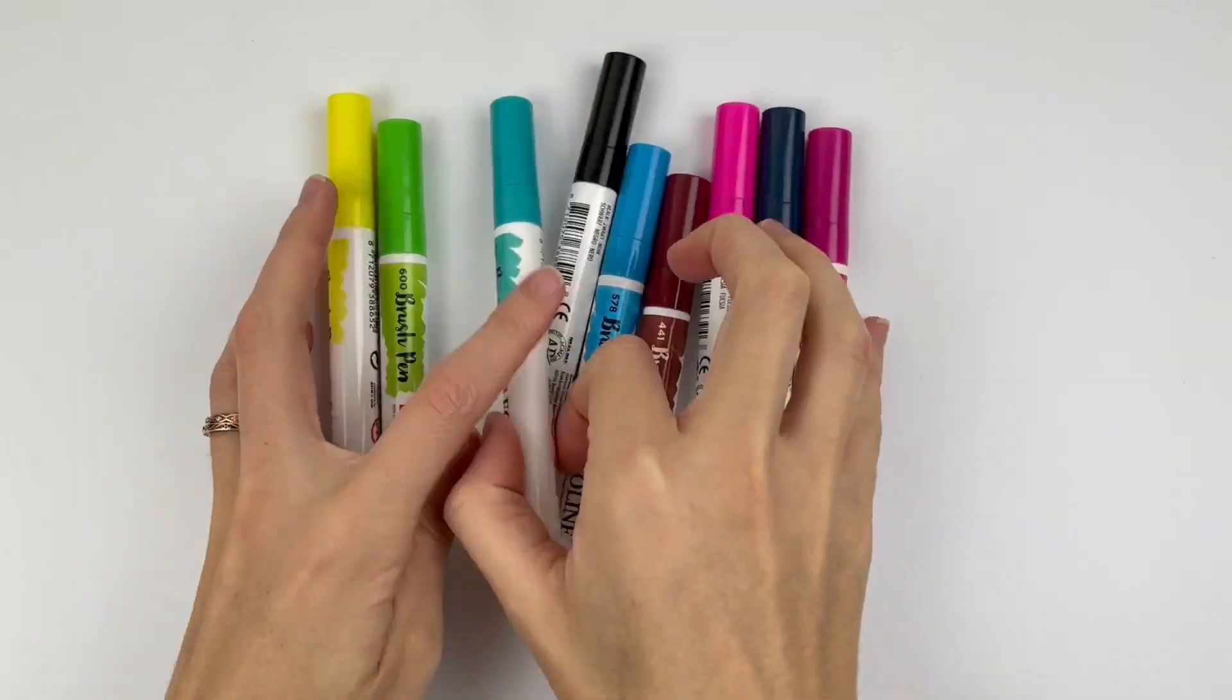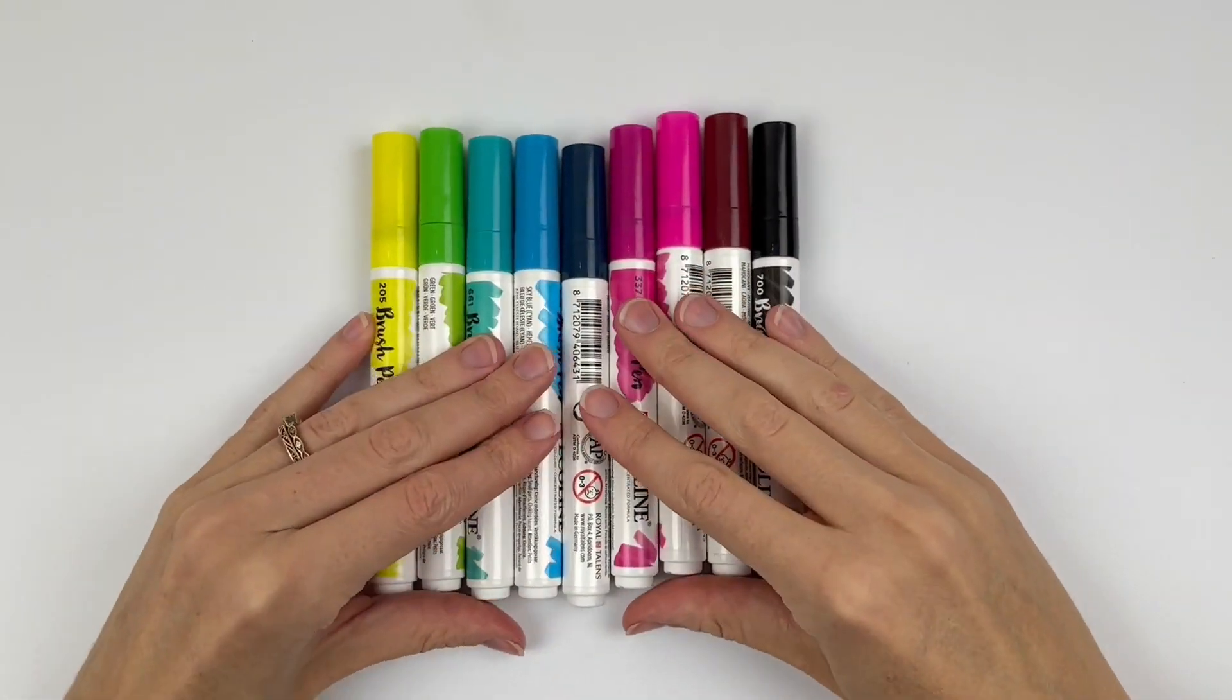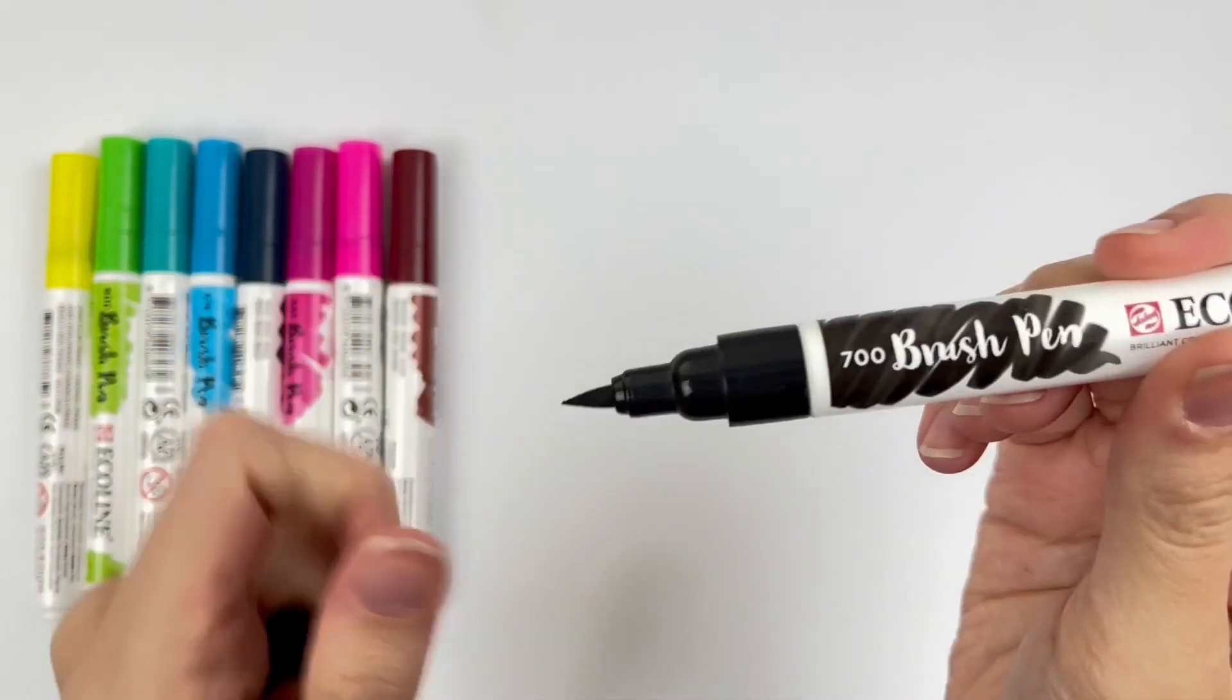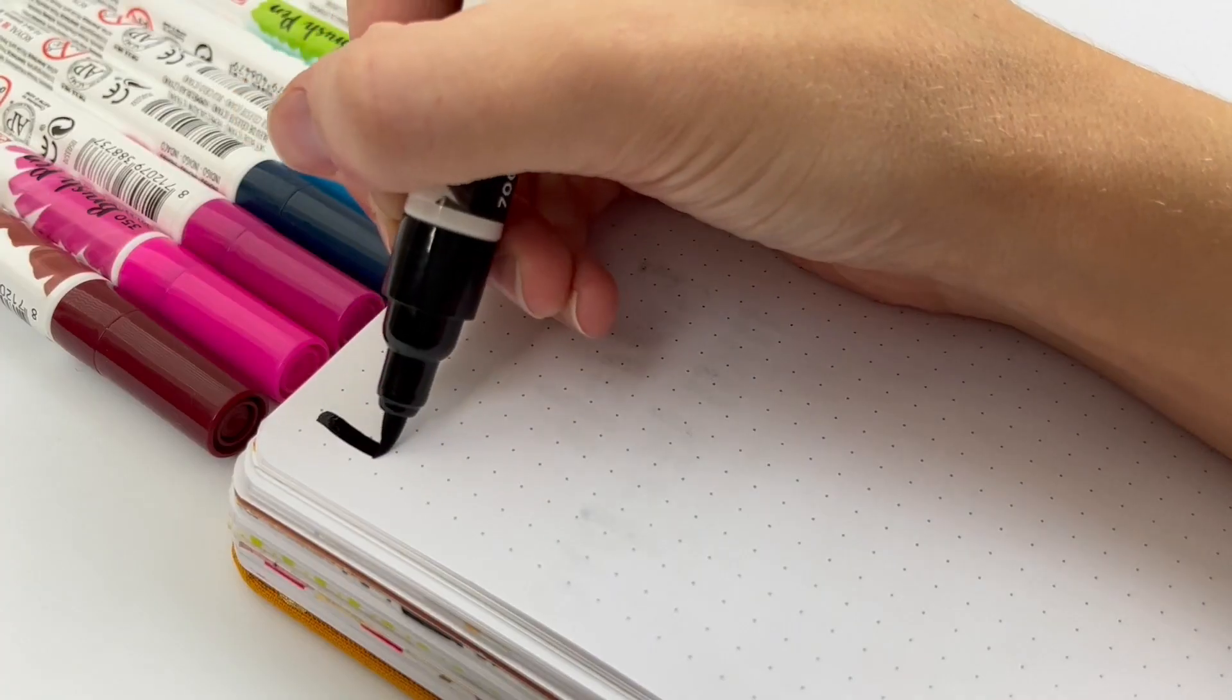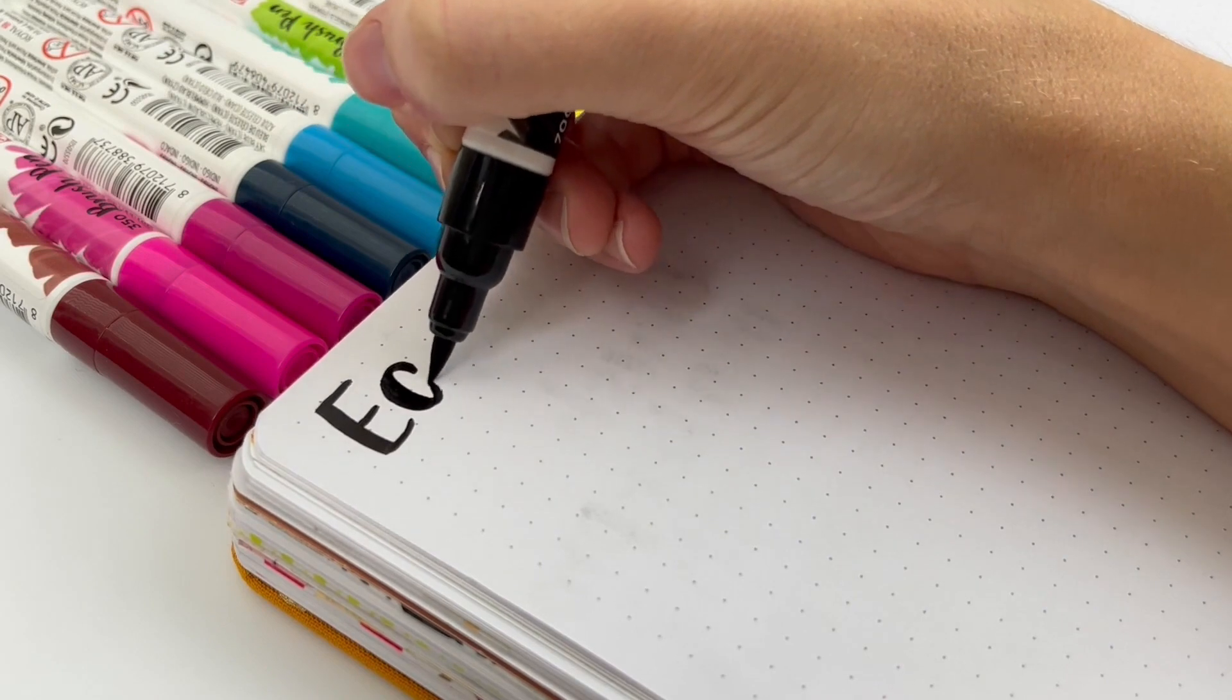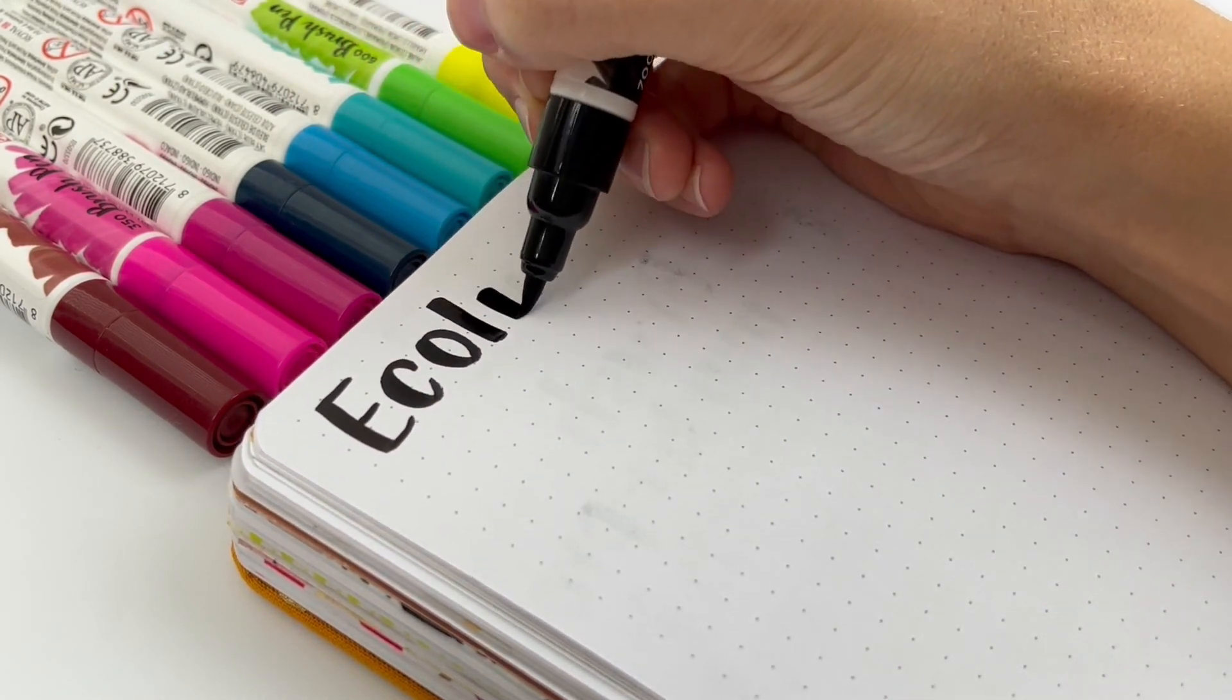These next ones are also watercolor. These are the Ecoline brush pens. Ecoline has great liquid watercolors, so these are the same watercolors but in marker form. The brush tip is really soft. It has a good bounce, but it does take more control because it's so soft. Some people prefer the softer tip, and you have to figure out which one you like better.